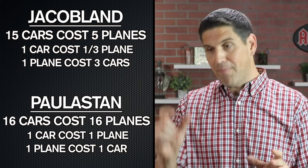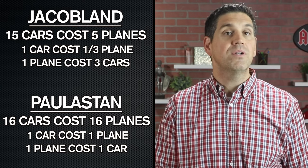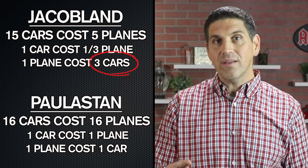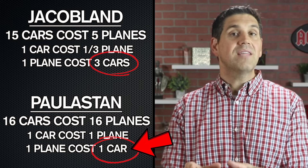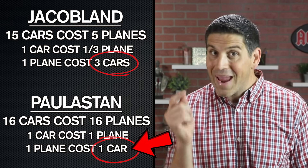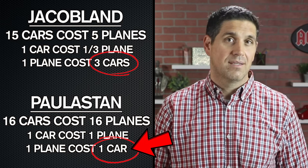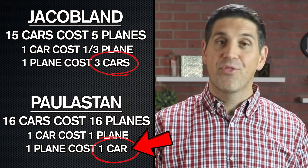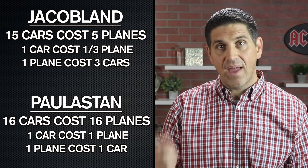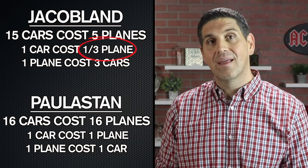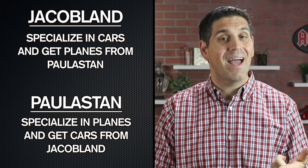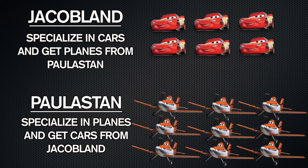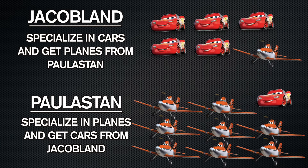So who should specialize in planes? Jacob Land has an opportunity cost of three cars for each plane and Polistan has an opportunity cost of only one car. Polistan has a lower opportunity cost, so they have a comparative advantage in planes — giving up only one car is better than giving up three. And Jacob Land has the comparative advantage in cars because they only give up one-third of a plane while Polistan gives up one full plane. Both countries can specialize and trade to get the other product at a lower opportunity cost than if they produced it themselves — and like Kyle McDonald, both countries can benefit from trade.